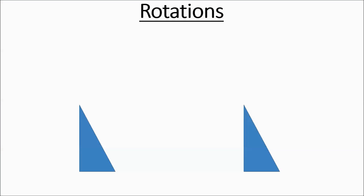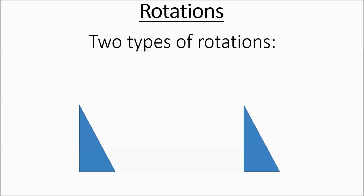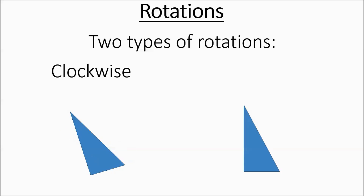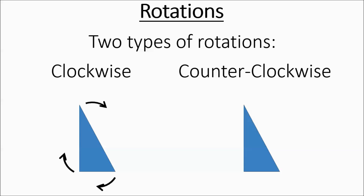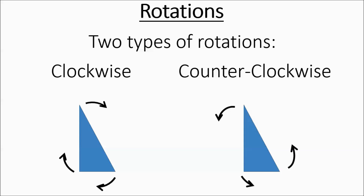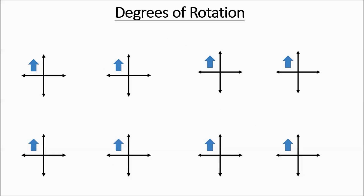Today we are learning about rotations. There are two types of rotations. You can do a clockwise rotation — basically spin it like a clock would go. And then you can also do counterclockwise rotations, which go the other way. Now we're going to be taking shapes, putting them on a coordinate plane, and then spinning them.